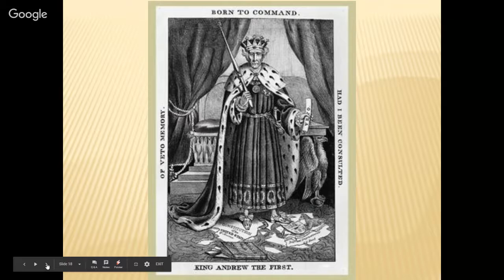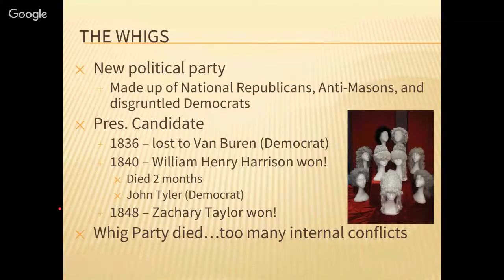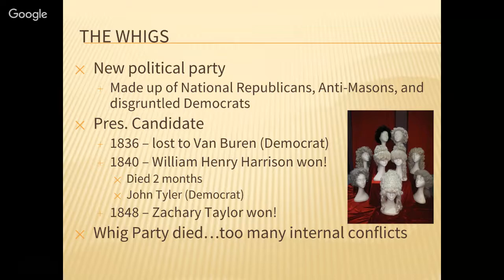Because there were people who opposed Jackson, a new political party was created specifically to oppose him. It was made up of National Republicans like John Quincy Adams, a group called the Anti-Masons, and Democrats who did not agree with Jackson. This party formed around 1834 and was called the Whig Party. The name came from a 17th-century British Whig group that had defended English freedoms against the Stuart kings, who were taking advantage of those freedoms — that's who they modeled their ideas after. They started putting forth their own candidates.